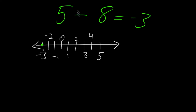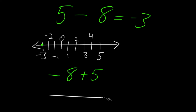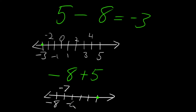Now like we did before, if you wanted to, you could switch the order of these two numbers — just remember to keep the signs with the numbers. Since we have a minus 8 here, we could rewrite it as negative 8 plus 5. Using a number line, starting at negative 8 and going right by 5 — counting through negative 7, negative 6, negative 5, negative 4, negative 3 — we get the same result: negative 3.